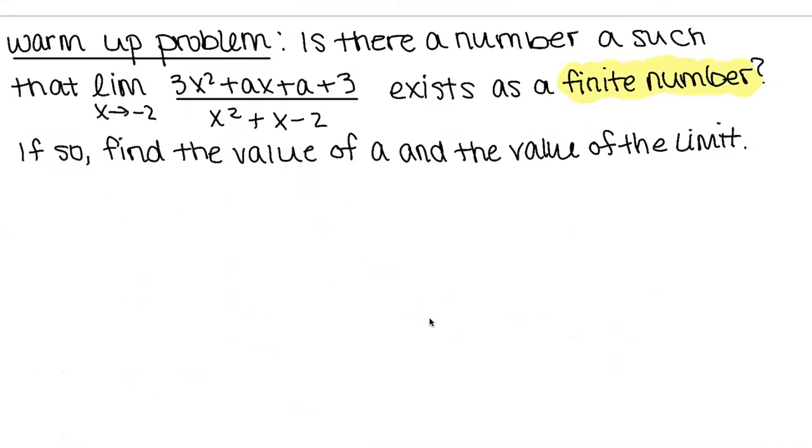Maybe put in the chat what you think we could do first. Okay, so we have some suggestions for factoring. It might be a little hard to factor the numerator. Usually anytime we have a limit, we should probably just plug in what the value is just to see what happens. So what is going to happen when we plug in negative 2?